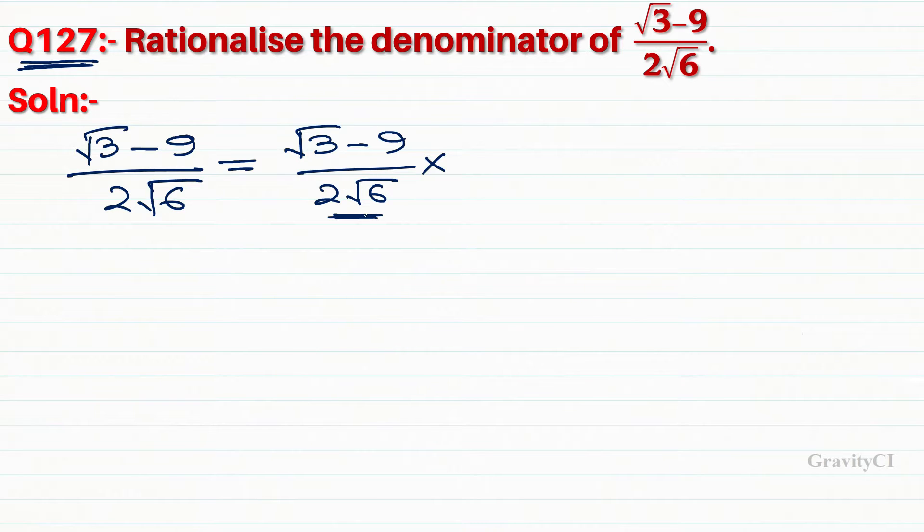The simplest rationalizing factor is √6, so we multiply the numerator and denominator by √6.